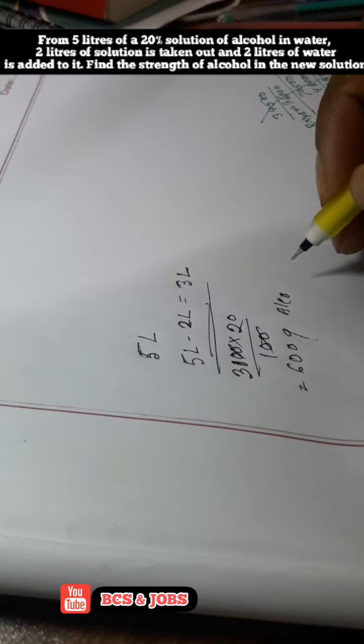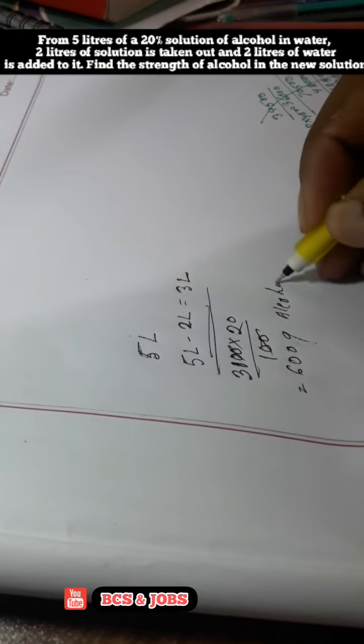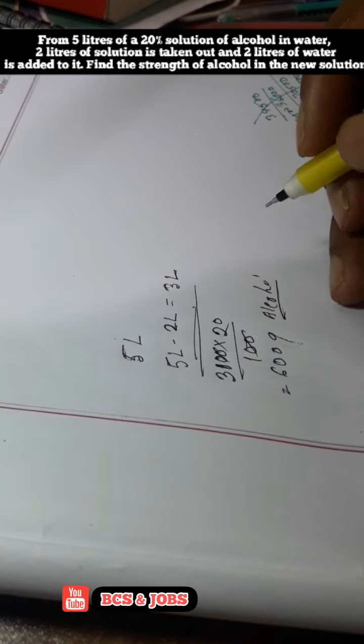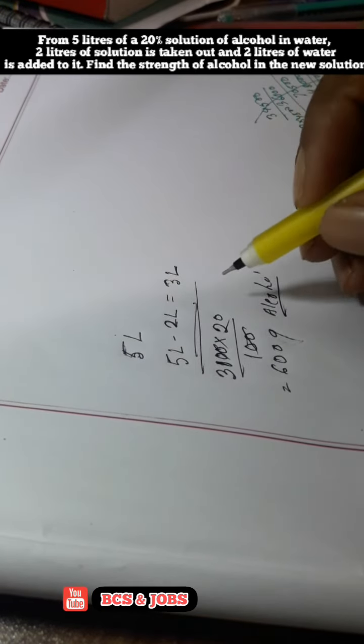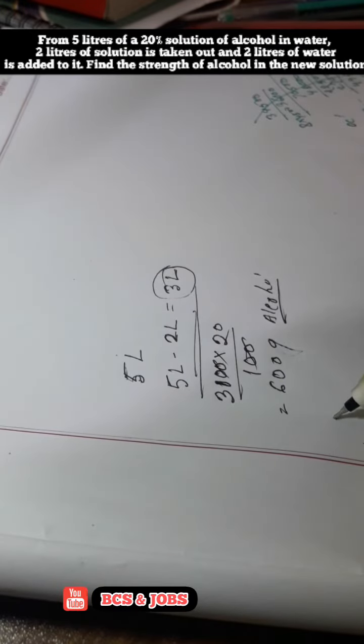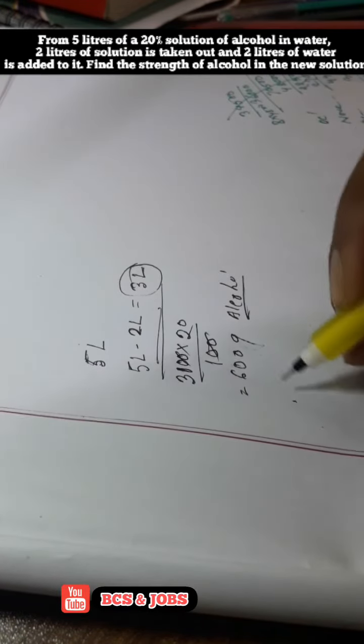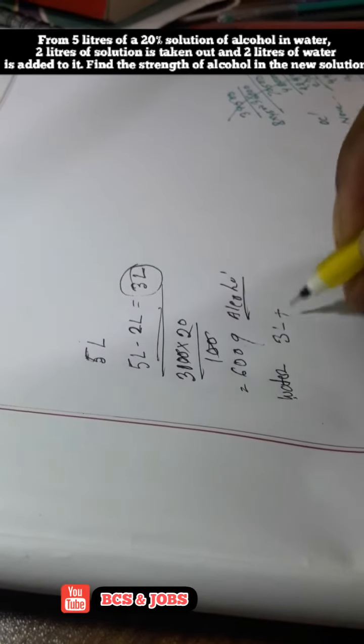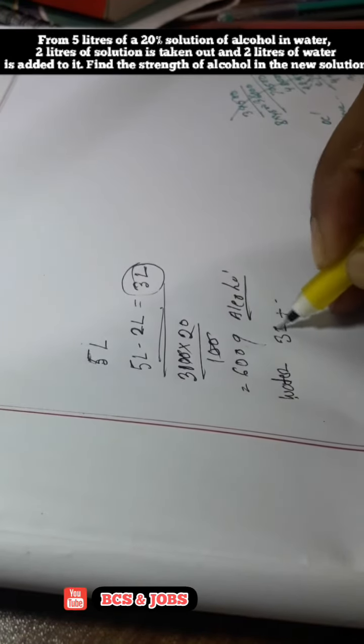When 2 liters is added, the alcohol remains the same amount. We had 3 liters originally, and now 2 liters of water is added, so the total mixture becomes 5 liters, which is 5000 grams.